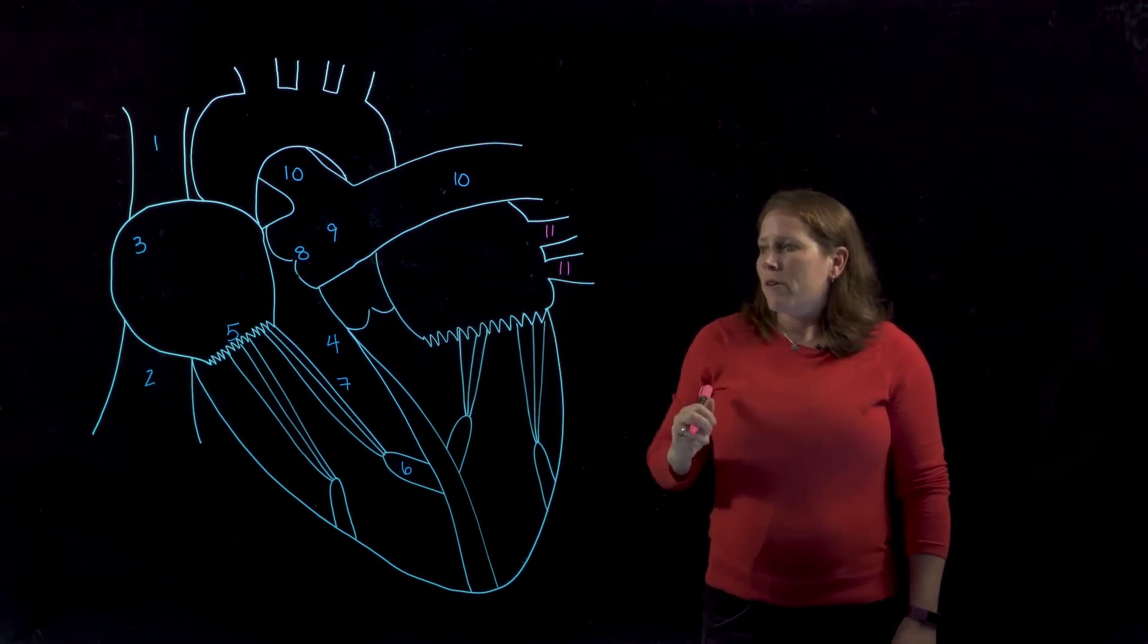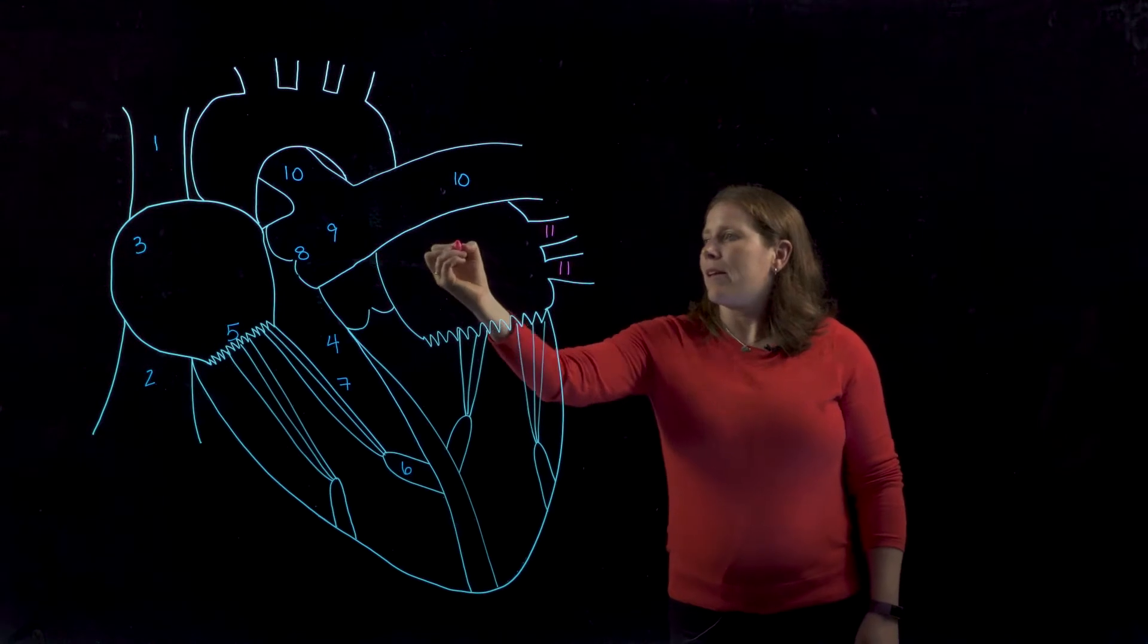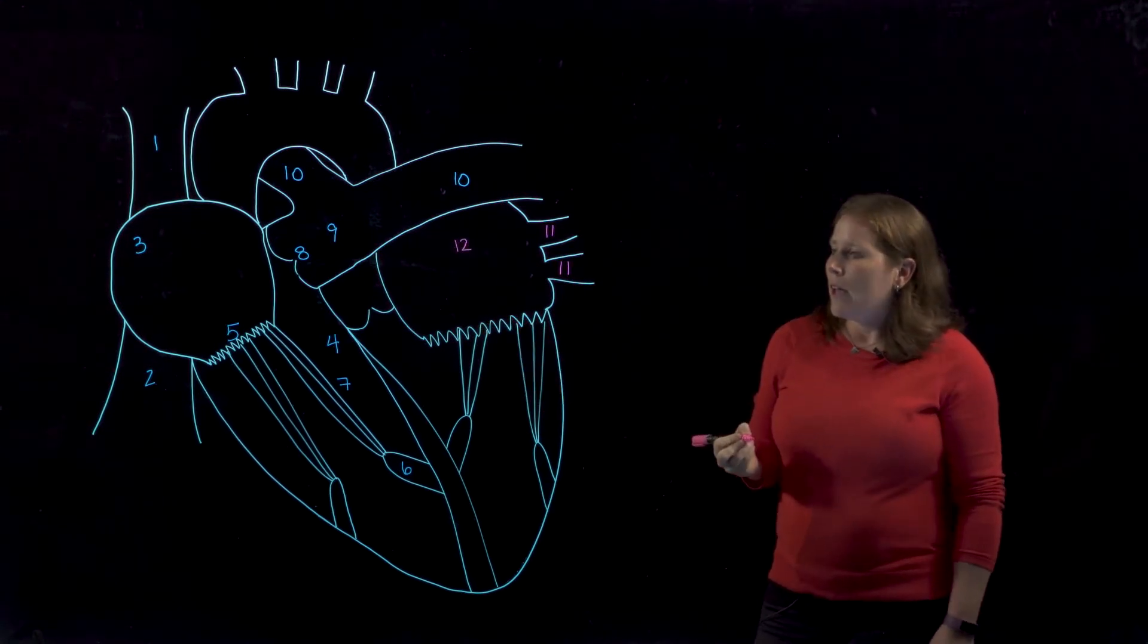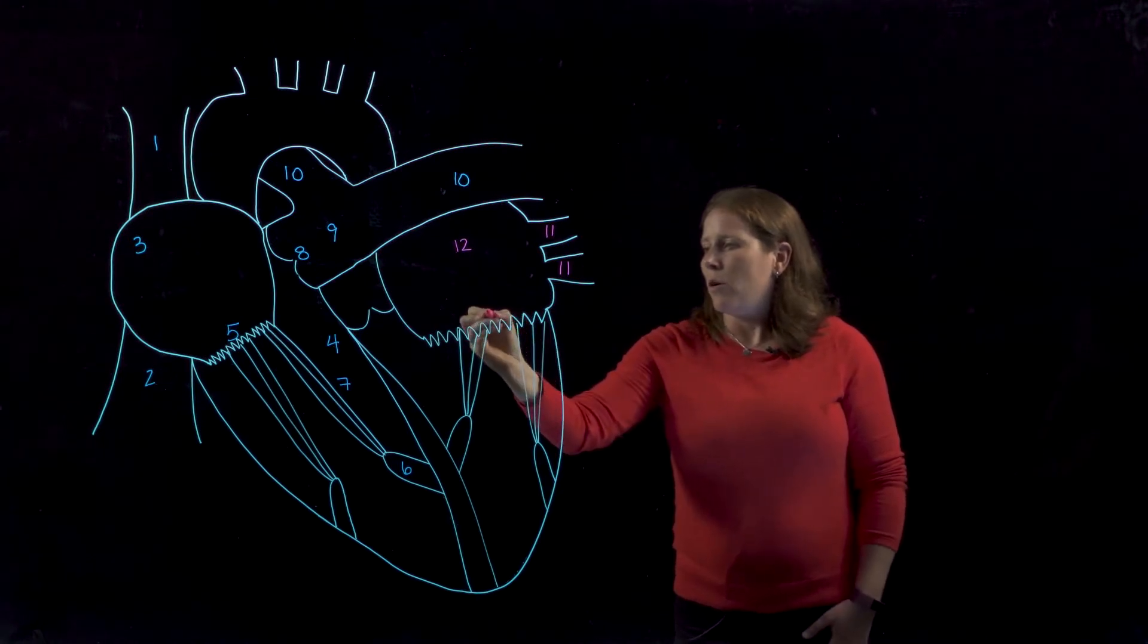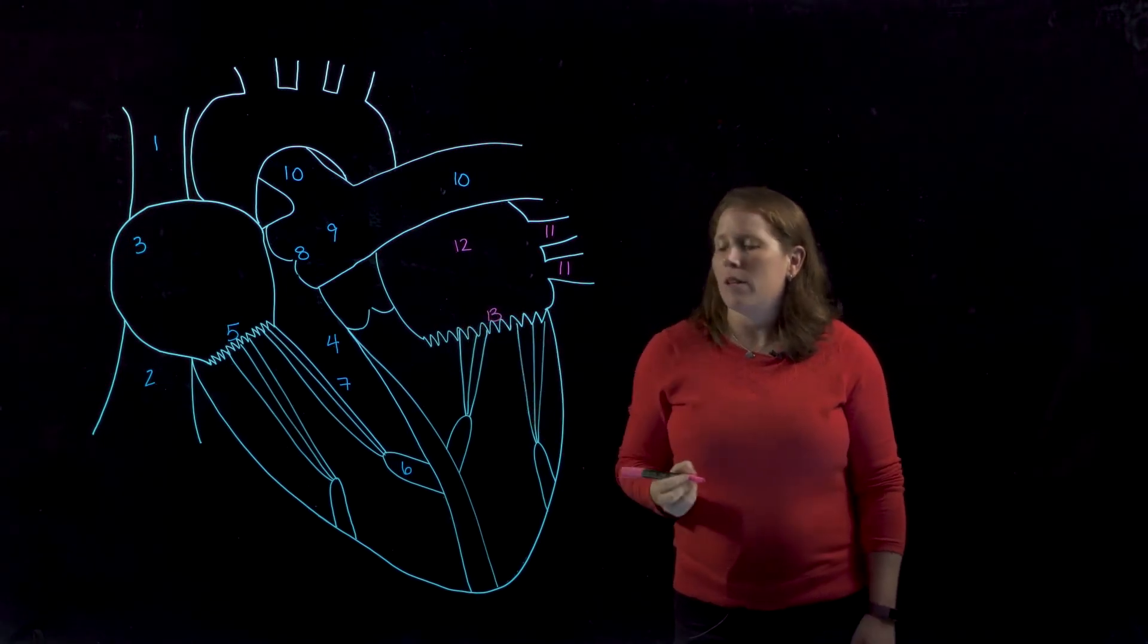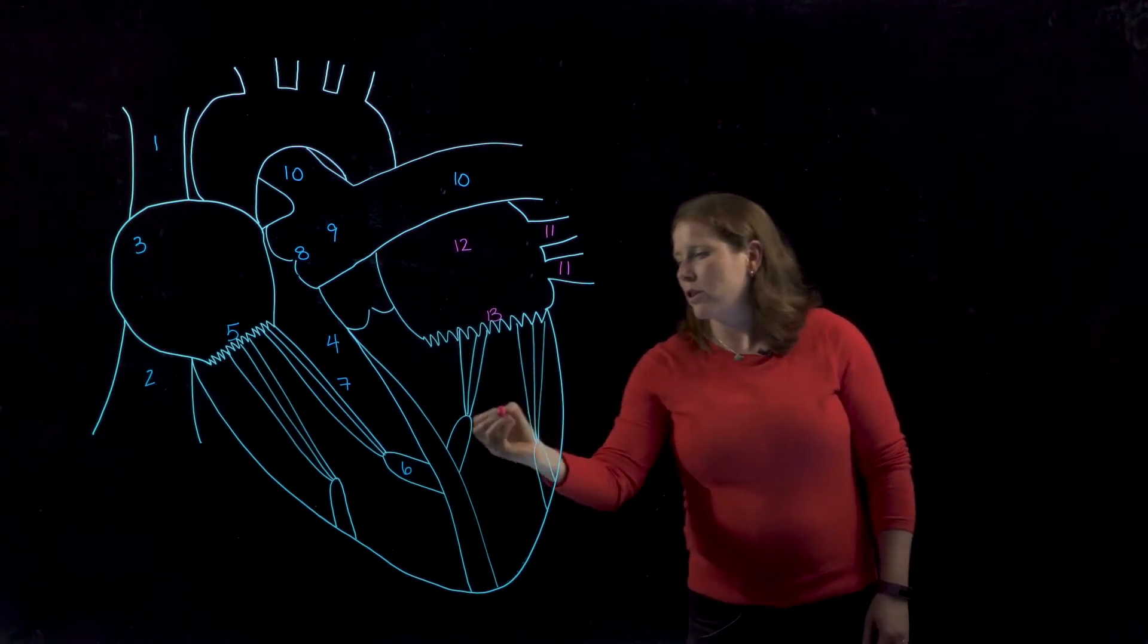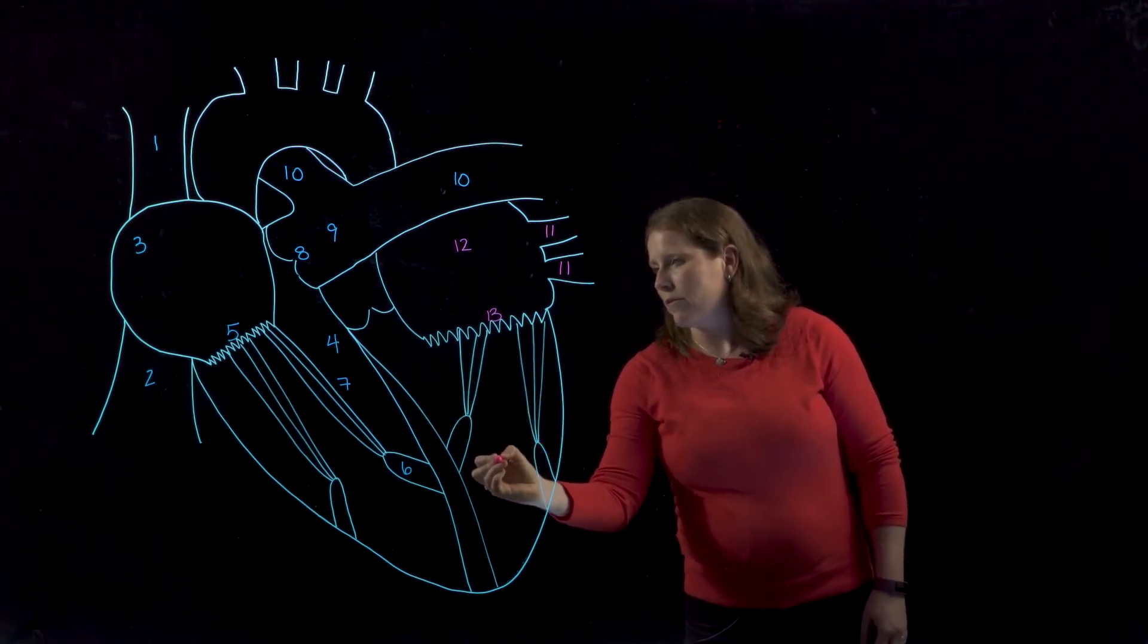These pulmonary veins bring blood back into the left atrium and from the left atrium blood will pass through the left atrioventricular valve to reach the left ventricle.